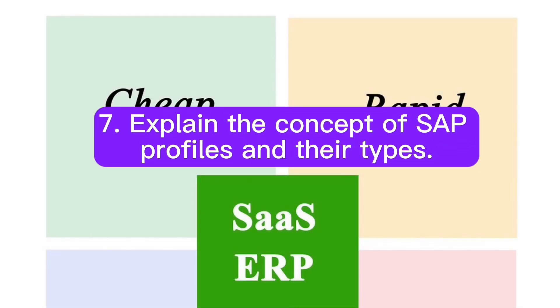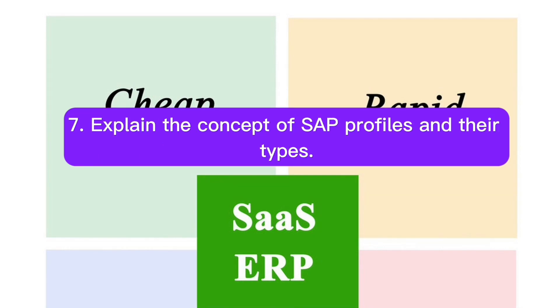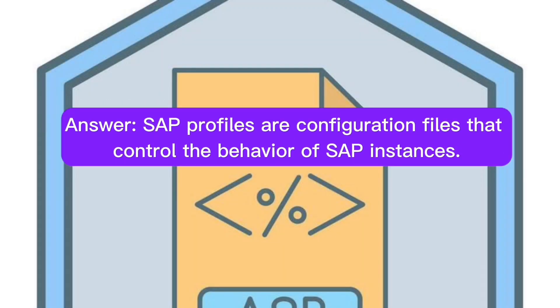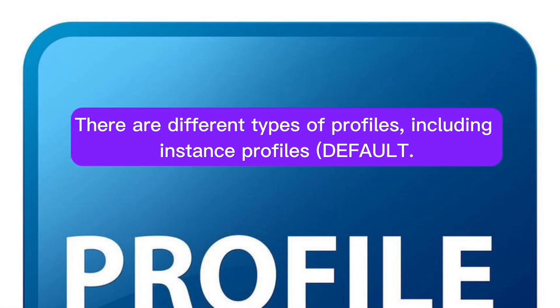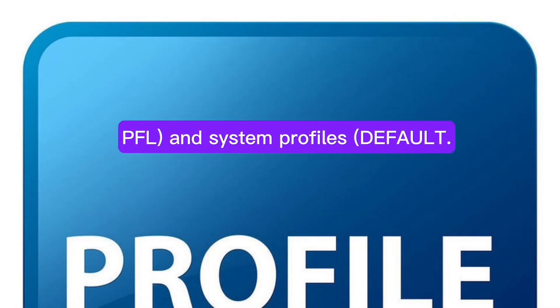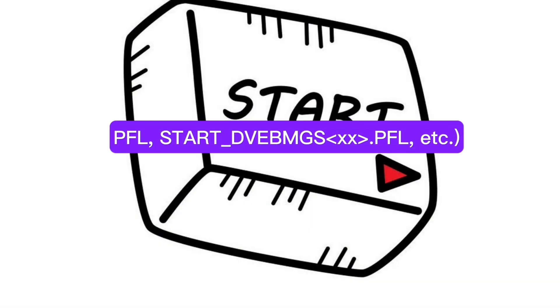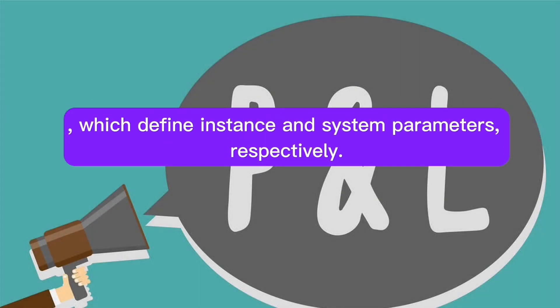Question 7: Explain the concept of SAP profiles and their types. SAP profiles are configuration files that control the behavior of SAP instances. There are different types of profiles, including instance profiles (DEFAULT.PFL) and system profiles (DEFAULT.PFL, START_DVEBMGS##.PFL, etc.), which define instance and system parameters respectively.